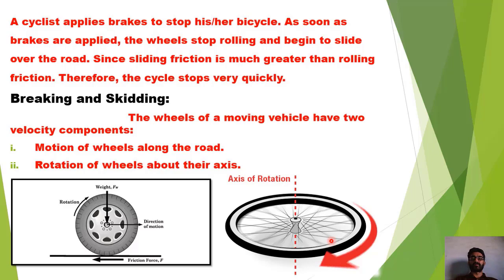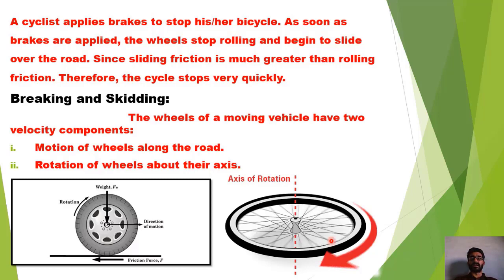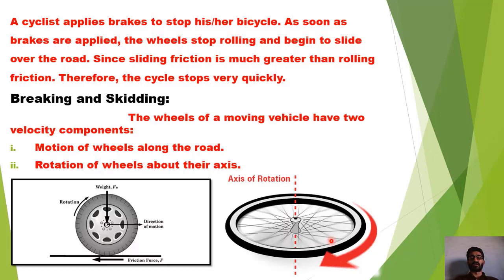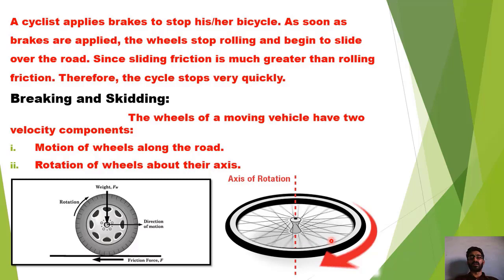آپ نے bicycle چلائی ہوگی۔ Bicycle کو چلانے کے لیے pedals کا use کرتے ہیں، جب تک ہم pedals پہ force لگاتے جاتے ہیں تب تک cycle چلتی جاتی ہے۔ Cycle کے wheels کی motion rolling motion ہوتی ہے۔ لیکن جیسے ہم آہستہ آہستہ brake apply کرنا شروع کرتے ہیں تو cycle آہستہ آہستہ رکنا شروع ہو جاتی ہے۔ Brakes apply کرنے کے نتیجے میں cycle کے wheels کا زمین کے ساتھ contact بڑھنا شروع ہو گیا یعنی ان کی motion rolling کے بجائے sliding ہو گئی، sliding کے نتیجے میں friction کی value increase ہونا شروع ہو جائے گی اور bicycle رک جائے گی۔